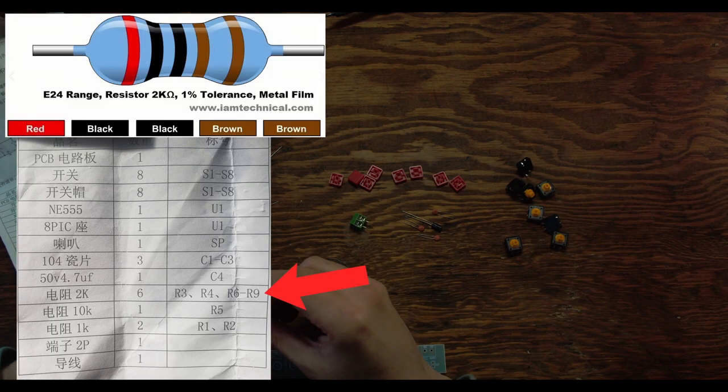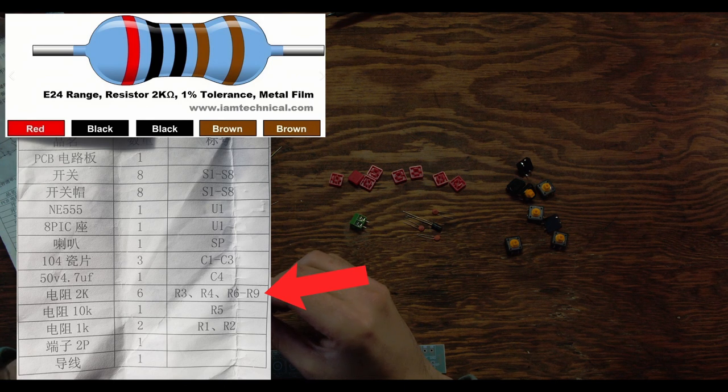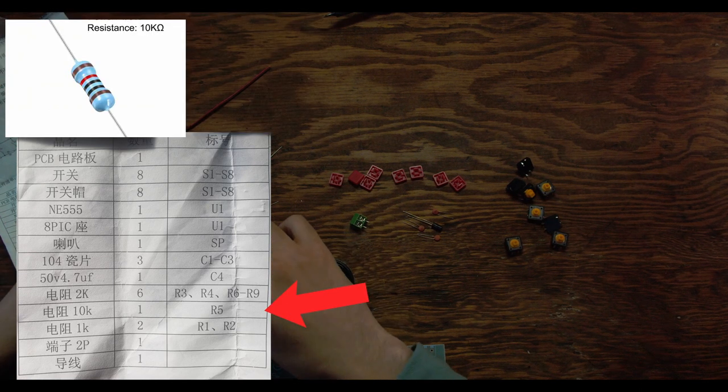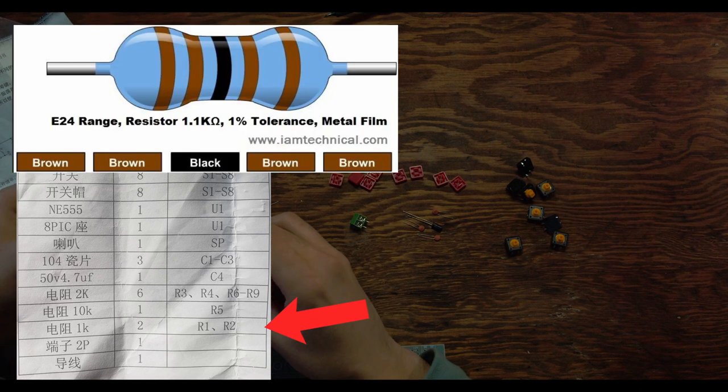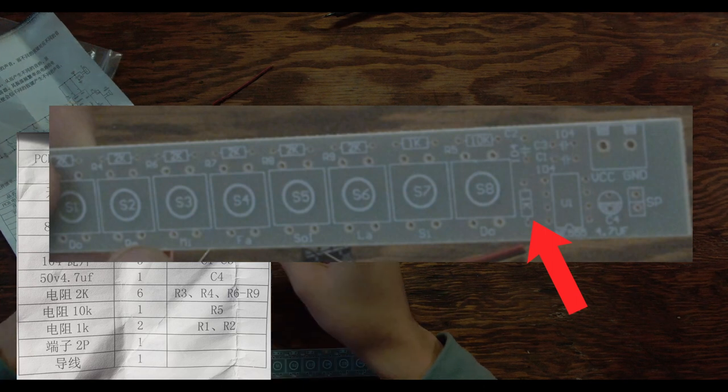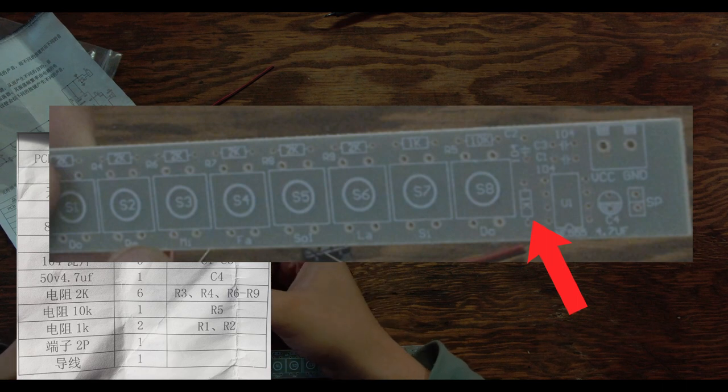You should have six 2k resistors that go through R3, R4, R6, R7, R8, and R9. You should have one 10k resistor and then two 1k resistors. In the video I forgot about one of the 1k resistors as I was building it but in the end I showed that we went back and built it so just keep a note of that.